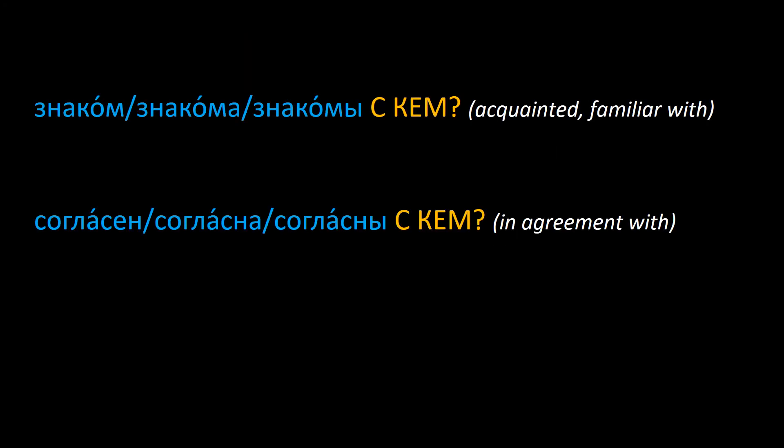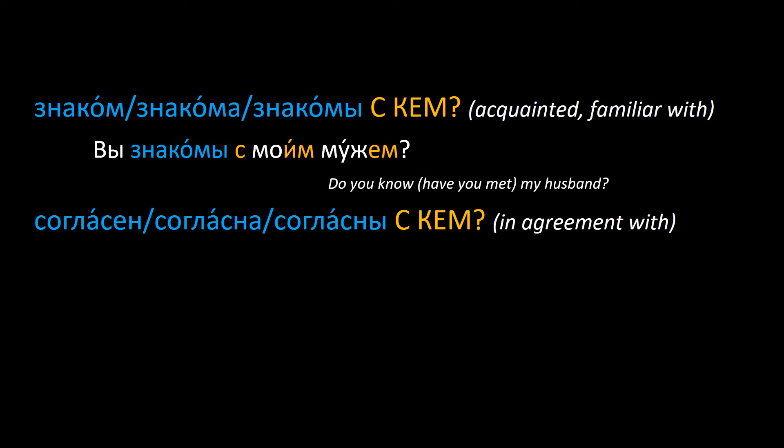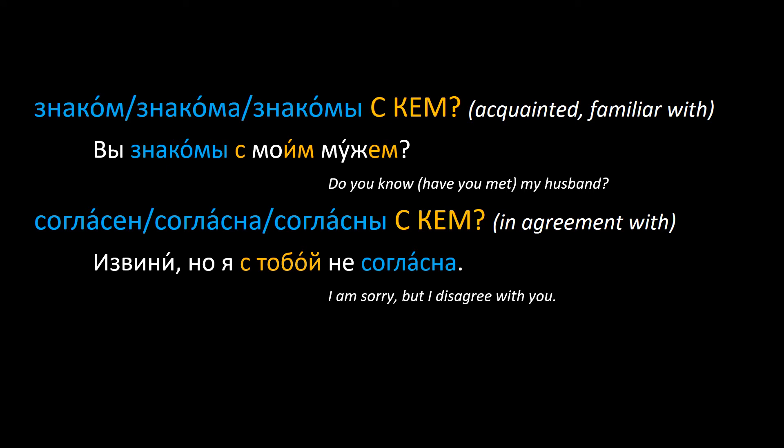The words знаком / знакома / знакомы, meaning acquainted or familiar with, and согласен / согласна / согласны, meaning to be in agreement with someone, are also used with the С кем / чем construction: вы знакомы с моим мужем? Извини, но я с тобой не согласна.